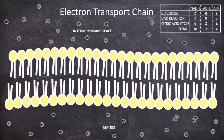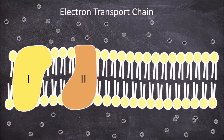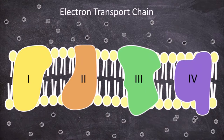The electron transport chain occurs in the inner mitochondrial membrane. Within the membrane there are 4 protein complexes involved: complexes 1, 2, 3, and 4. There are also several mobile electron carriers within the membrane.